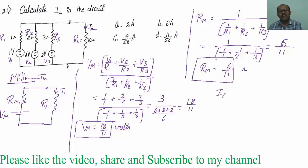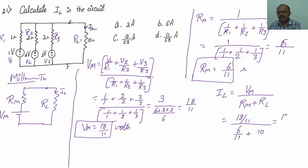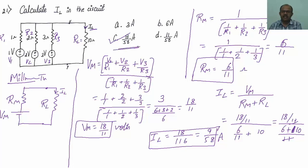Next, find the load current IL. IL = Vm / (Rm + RL) = (18/11) / (6/11 + 10) = (18/11) / (116/11) = 18/116 = 9/58 amperes. So the answer is option C: 9/58 amperes.